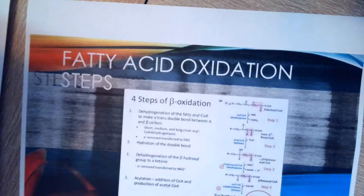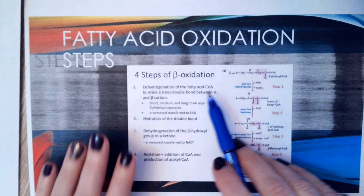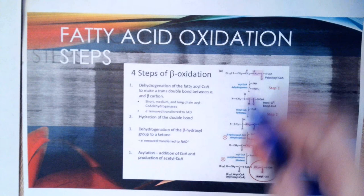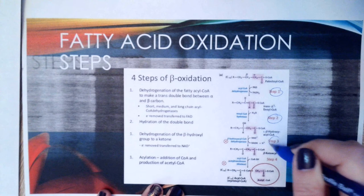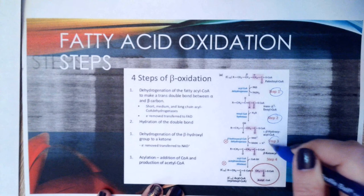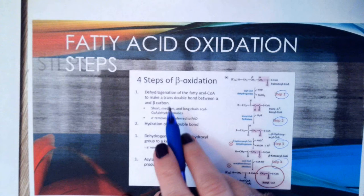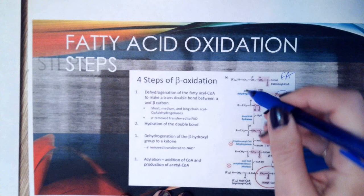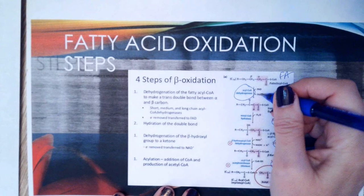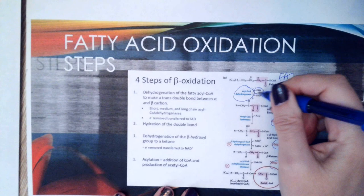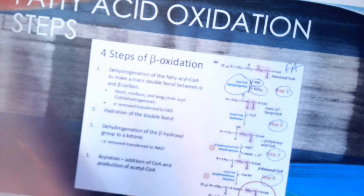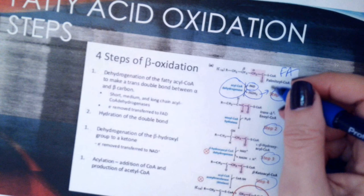Now for beta oxidation itself — there are four steps. Step one: we dehydrogenate the fatty acid, transferring an electron onto FAD to create FADH2, which can go on to the oxidative phosphorylation pathway. Step two: we hydrate — we add water to the intermediary product. Step three: we dehydrogenate again, taking an electron off the intermediary product and adding it to NAD to get NADH. So at this point we have both FADH2 and NADH.